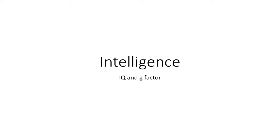We measure it by IQ, intelligence quotient. You have this factor in your head and we cannot measure it directly. We cannot put a rod in your head and measure this g-factor. But we can give you certain tests and then we know how intelligent you are. All the other intelligence stuff you hear about — multiple intelligences or something philosophical — it's not really factors we can measure. In science we test stuff and when we see it, then we think it's there.